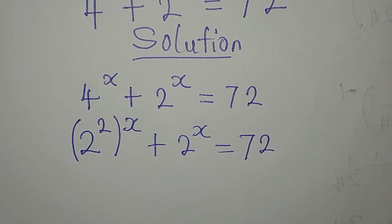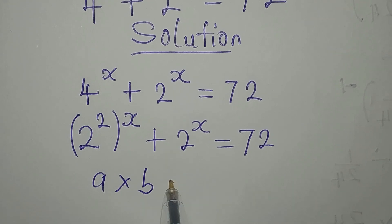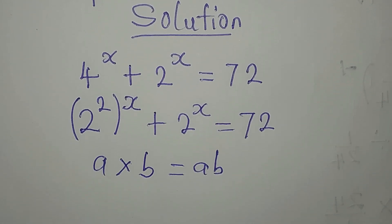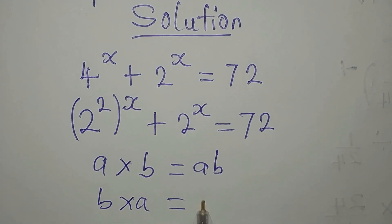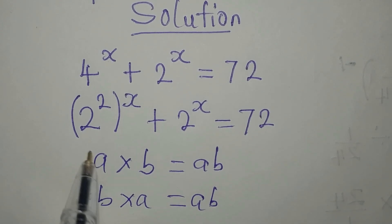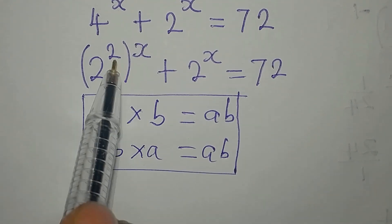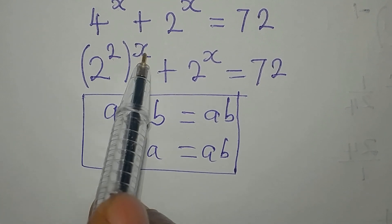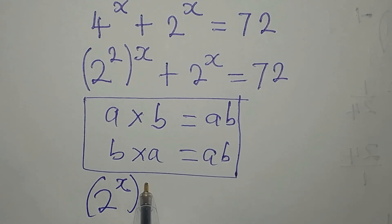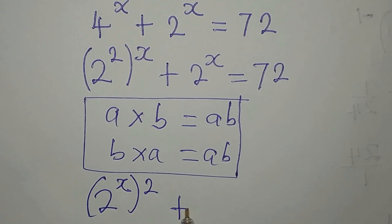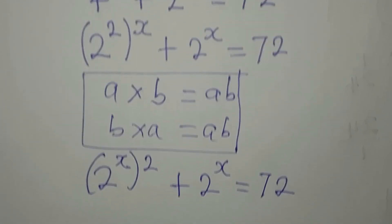We can change the position of these powers because if you multiply a and b, you get ab. If you change the position of a and b and get b times a, this still gives us ab — the position when multiplying does not matter. So x will come in and 2 will go out, giving us 2 to the power of x, to the power of 2, plus 2 to the power of x equals 72.